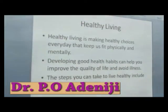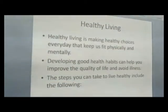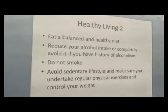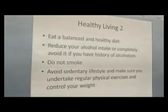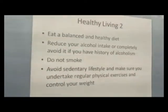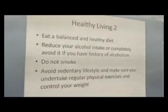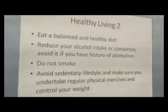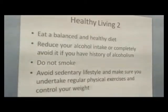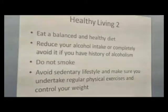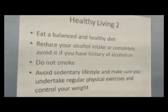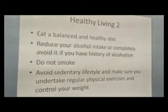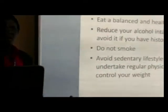The steps you can take to live healthy are the following. Number one: eat a balanced diet — a healthy diet. We have six different nutrients in food and you have to eat these nutrients according to their proportion. You have to plan your meal accordingly to get adequate nutrients and eat a balanced diet. The nutrients are proteins, carbohydrates, fats and oils, mineral salts, vitamins, and water.